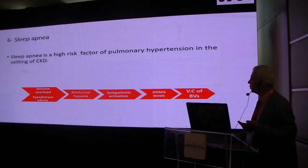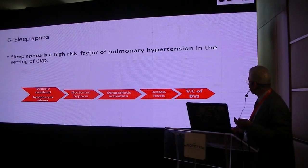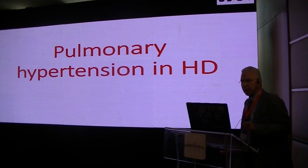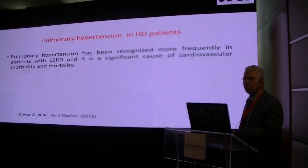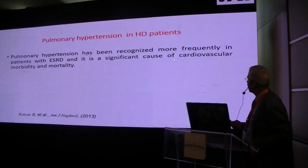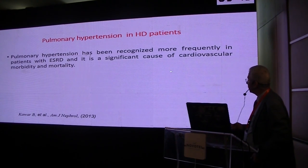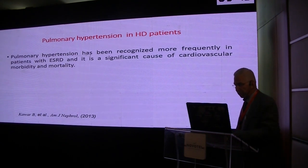Sleep apnea is another cause that may induce pulmonary hypertension, usually associated with volume overload, hypopharyngeal edema, nocturnal hypoxia, sympathetic activation, and vasoconstriction of blood vessels including the pulmonary artery, leading to elevation of pulmonary arterial pressure. Pulmonary hypertension has been recognized more frequently in patients with end-stage renal disease and is a significant cause of cardiovascular morbidity and mortality, beyond pulmonary arterial hypertension alone.